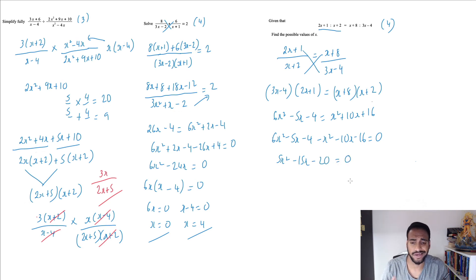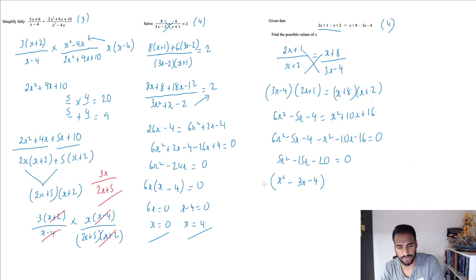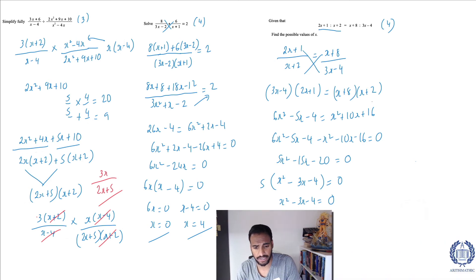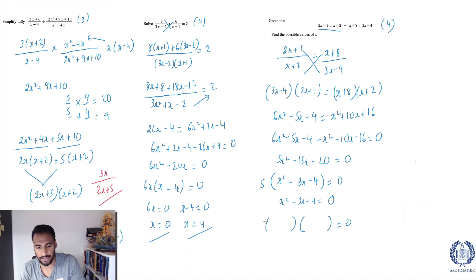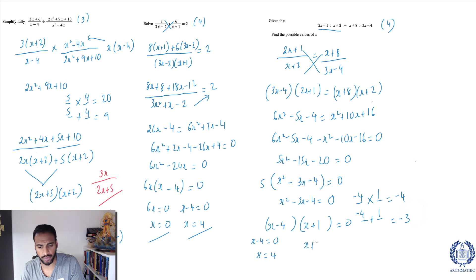Bringing x squared and 10x to the left-hand side: 6x squared minus 5x minus 4 minus x squared minus 10x minus 16 equals zero. That simplifies to 5x squared minus 15x minus 20 equals zero. Dividing everything by 5: x squared minus 3x minus 4 equals zero. Factorizing: two numbers that multiply to minus 4 and add to minus 3 are minus 4 and 1. So (x minus 4)(x plus 1) equals zero. Therefore x equals 4 or x equals minus 1 — that's your answer.